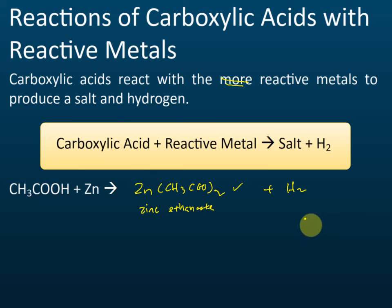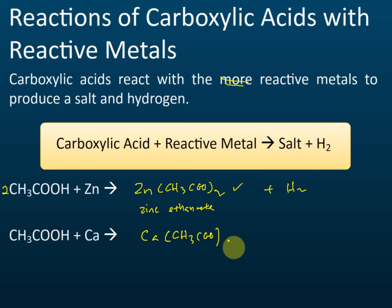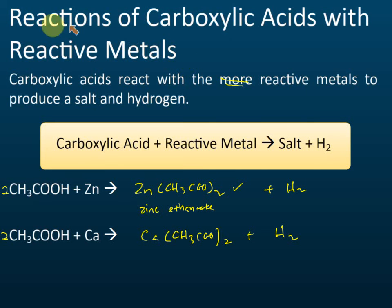To balance the equation we need two ethanoic acid molecules. Another example: ethanoic acid with calcium produces calcium ethanoate, Ca(CH₃COO)₂, plus hydrogen gas. We put a 2 in front to balance it. That covers the reaction between carboxylic acid and reactive metals — those are the metals higher than hydrogen in the reactivity series.